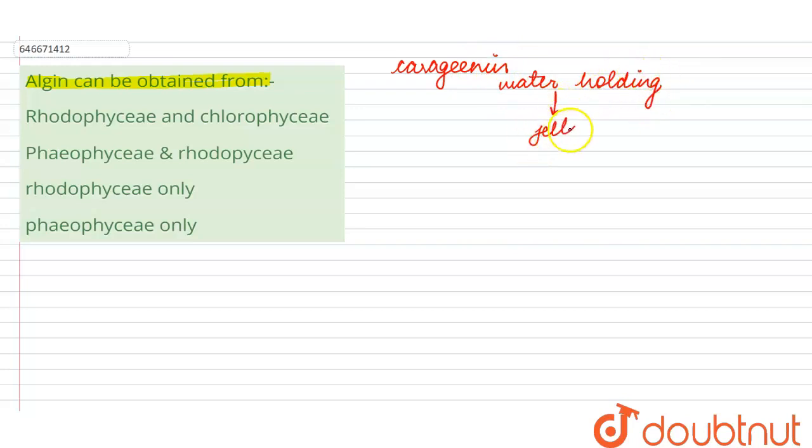Cosmetics use them to maintain consistency, while they are also used in ice creams and other such things. So here we see that algin is a kind of hydrocolloid.